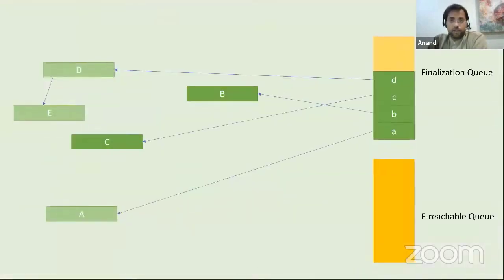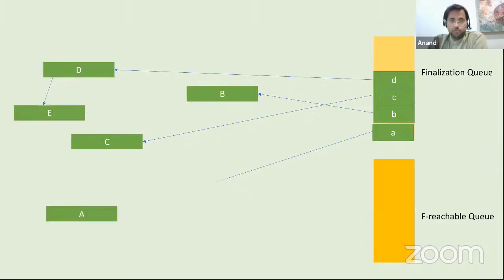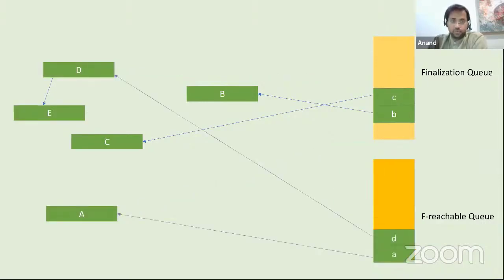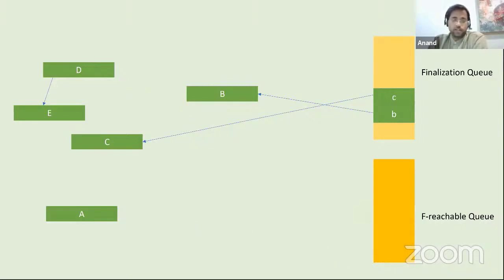The last source is the F-reachable queue. We know that a class can have a finalizer. When an object is created with a finalizer, a reference is added to the finalization queue. If the GC finds certain objects identified as dead, it looks at the finalization queue, marks them as live, and moves them to the F-reachable queue. We have effectively turned dead objects into live objects — that is why the finalization queue is another source of GC roots. Later, when the finalizer thread runs, it removes these references from the F-reachable queue, and those objects have survived a garbage collection cycle, moving to a higher generation. When the next GC happens for the higher generation, those objects will be collected.